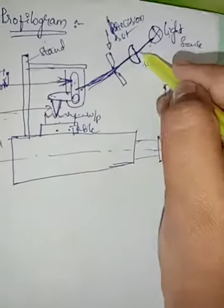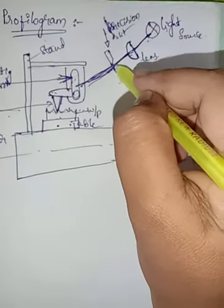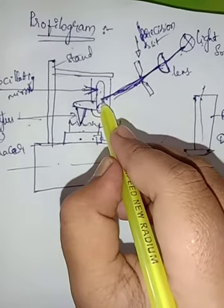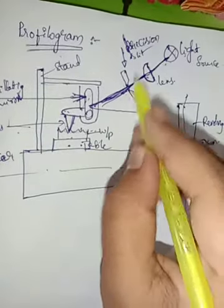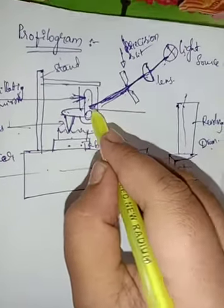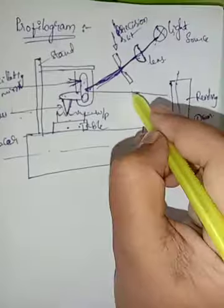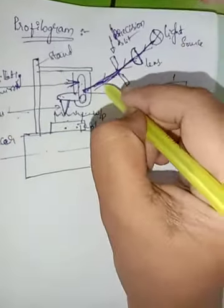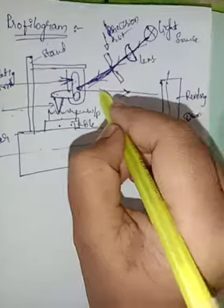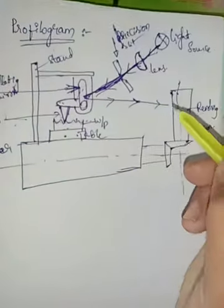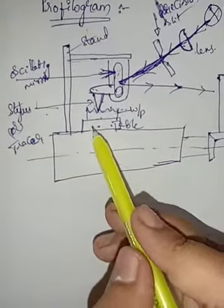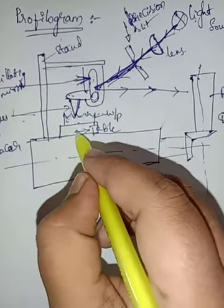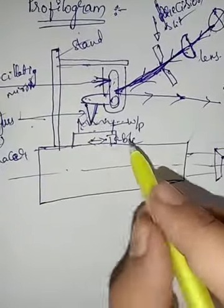The light travels from the source through the lenses to the precision slit and through the gap to the mirror. When it touches the mirror, we have the incident ray and the reflected ray from the mirror.